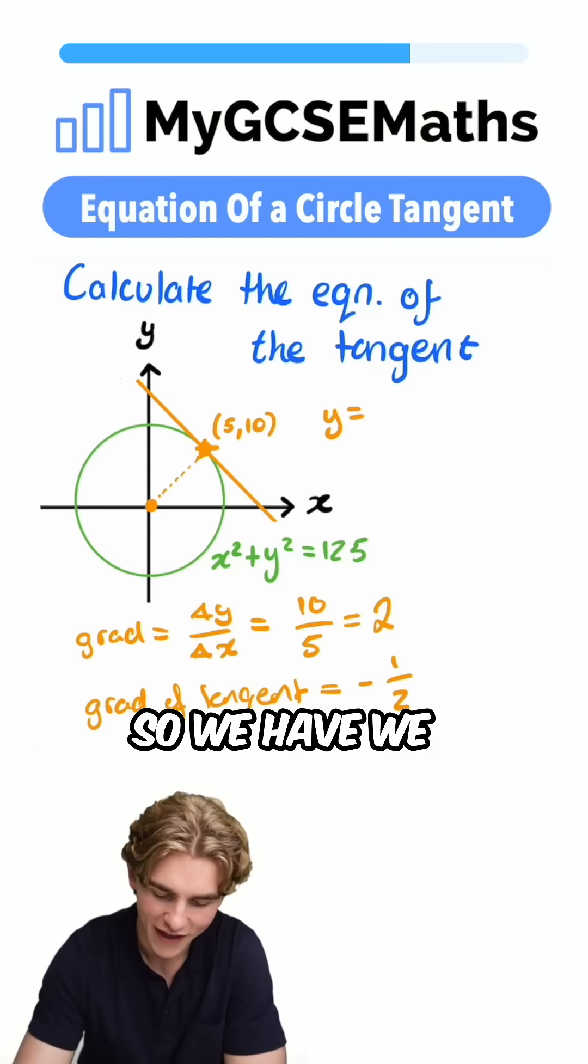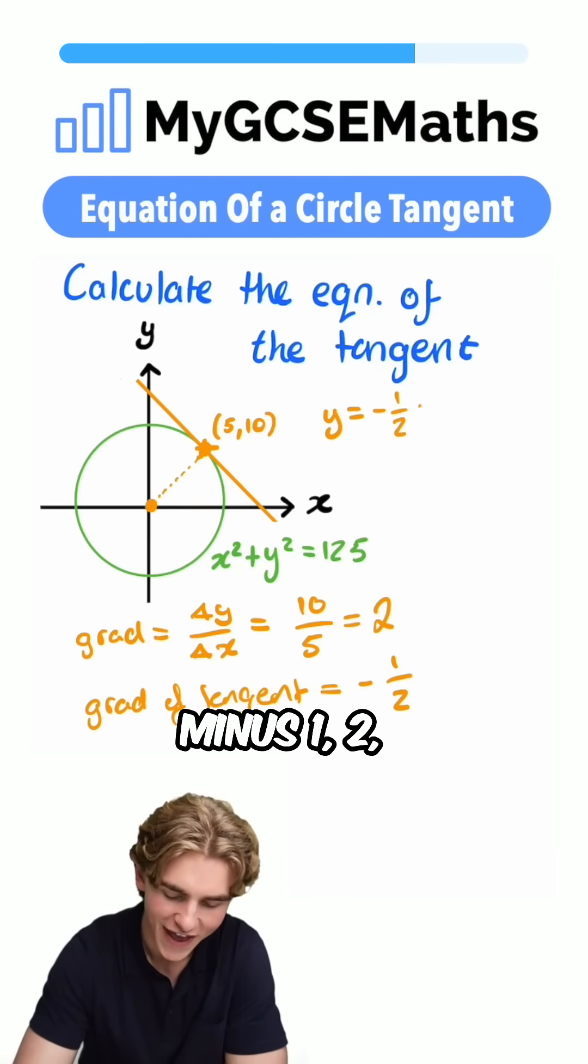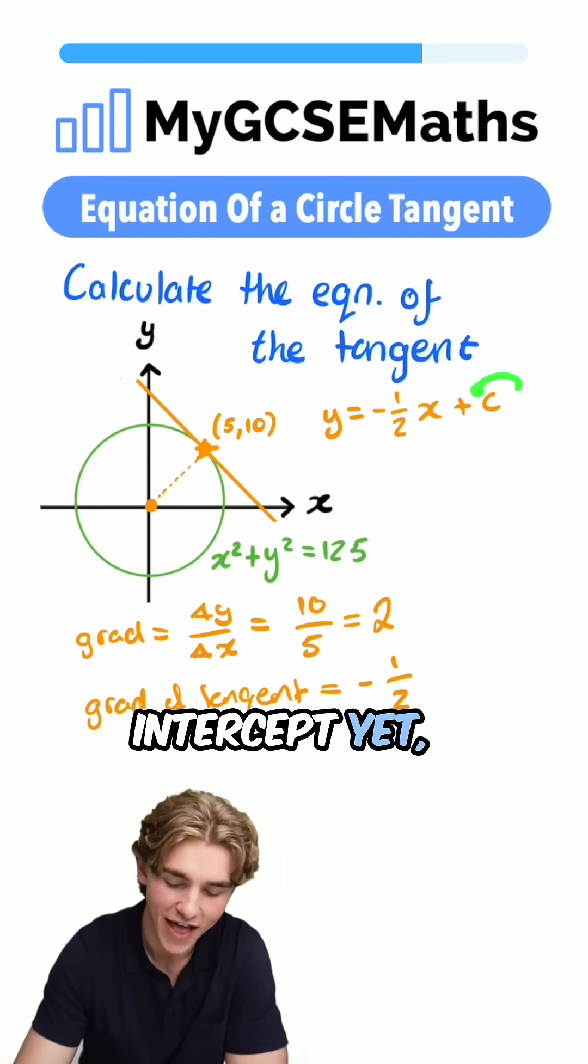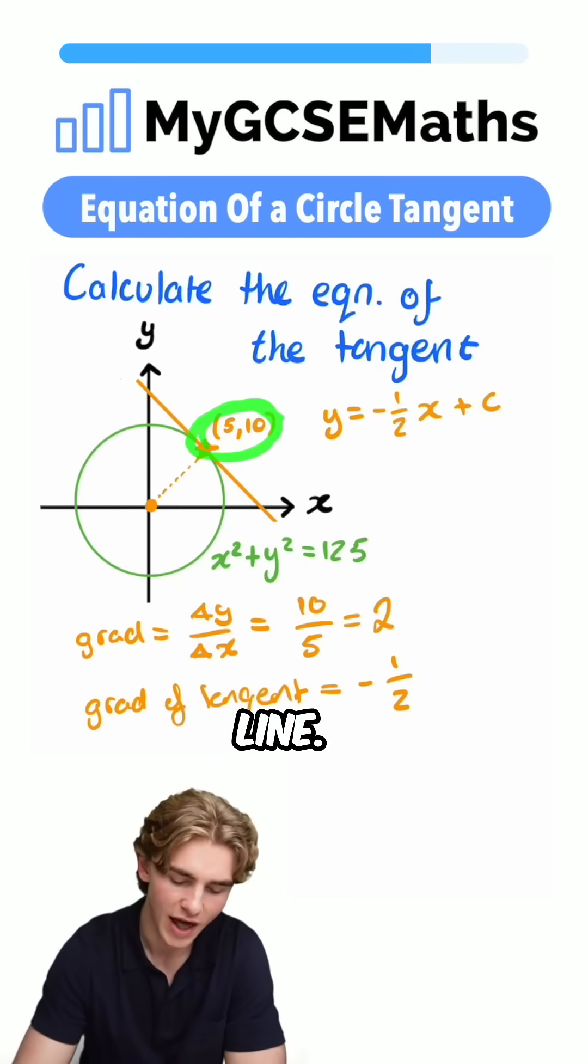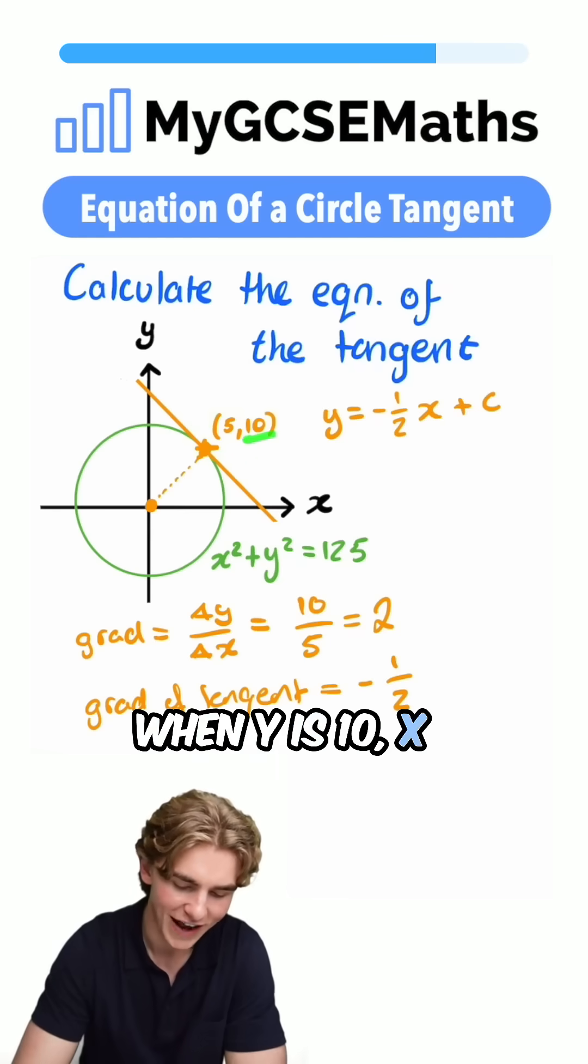We now have the gradient, so we have m. We have y = -1/2 x + c. We don't know our y-intercept yet, but we can find it by substituting in this point, which we know is on the line. We know that when y is 10, x is equal to 5.